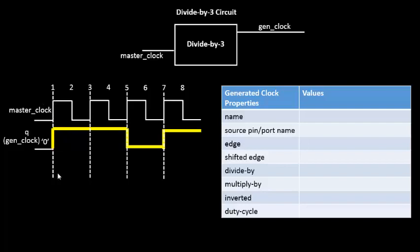This waveform has a specific relationship with the master clock in terms of edges. The rising edge of the generated clock comes at the first clock edge of the master clock. The falling edge comes at the fifth clock edge of the master clock, and the next rising edge of the generated clock comes at the seventh edge of the master clock.